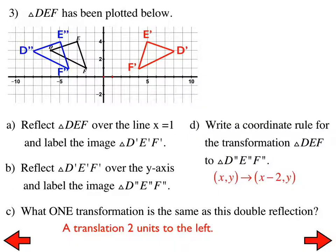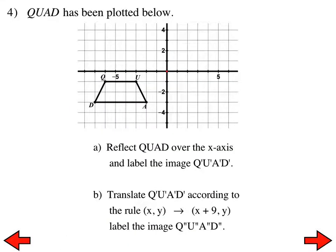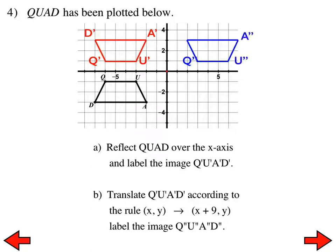Now work on problems 4 through 8 — either independently or with your shoulder partner — and we'll go through them in about 6 or 7 minutes. For number 4, we have quadrilateral QUAD. Reflect it over the x-axis and label it, then translate it 9 units to the right with no vertical movement.